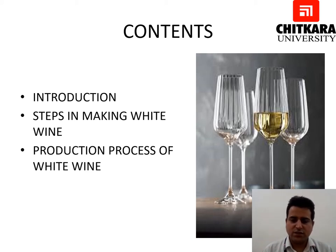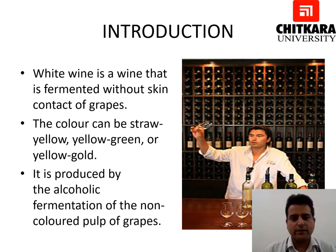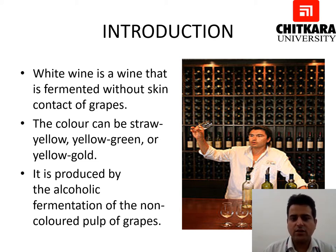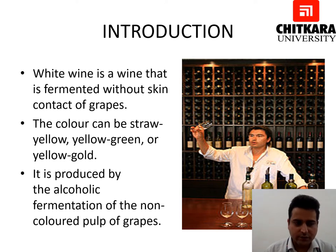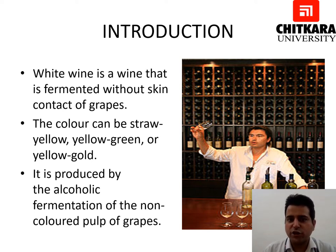White wines have been in existence for a long period of time. Wines have been a part of human society since generations, going back to a very long European history. White wine is produced or fermented without skin contact of grapes. The color can be straw yellow, yellow-green, or yellow-gold. It is produced by the alcoholic fermentation of the non-colored pulp of grapes. White wines have existed for more than 2,500 years and are consumed in very large numbers worldwide.